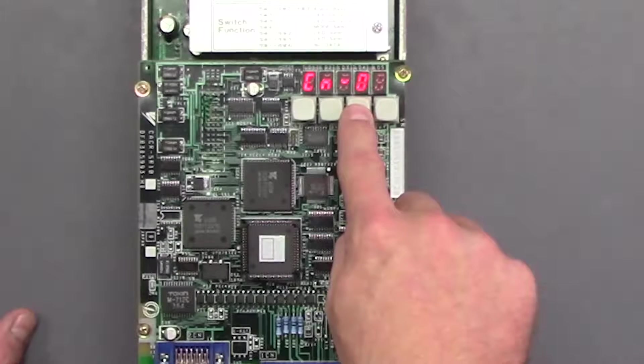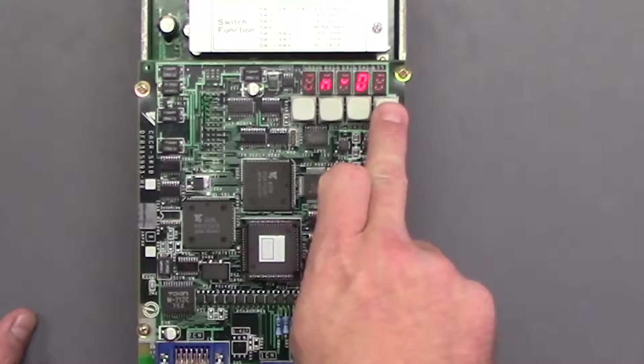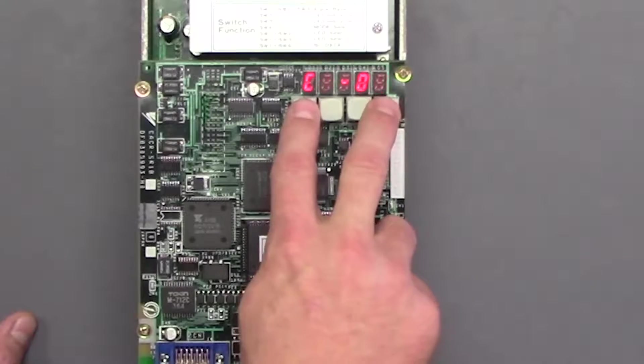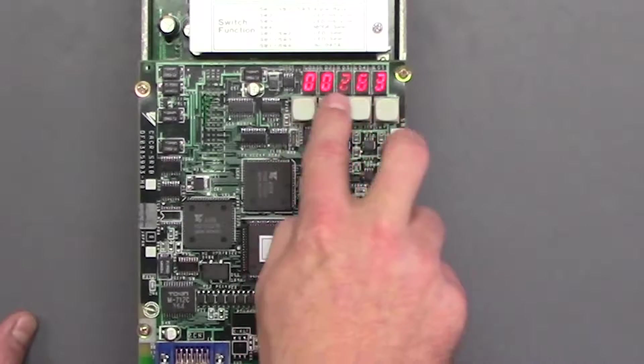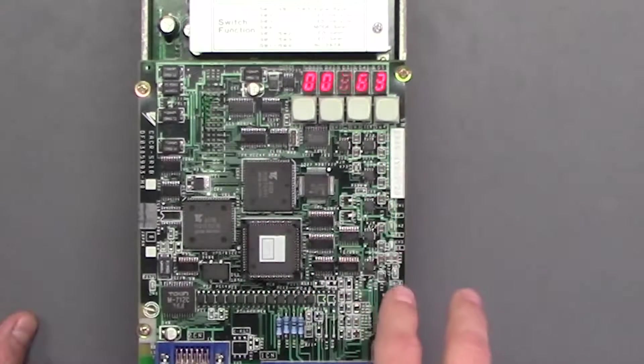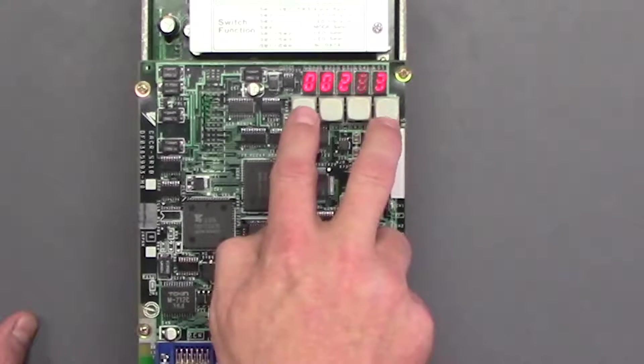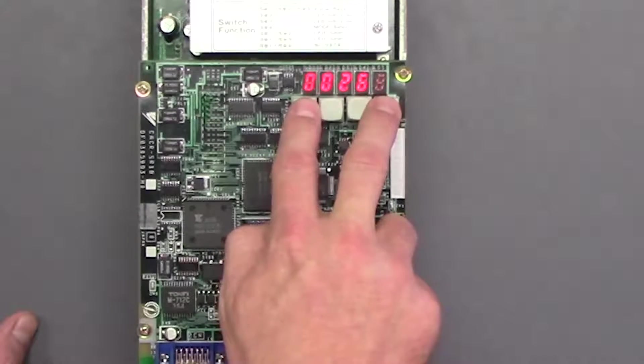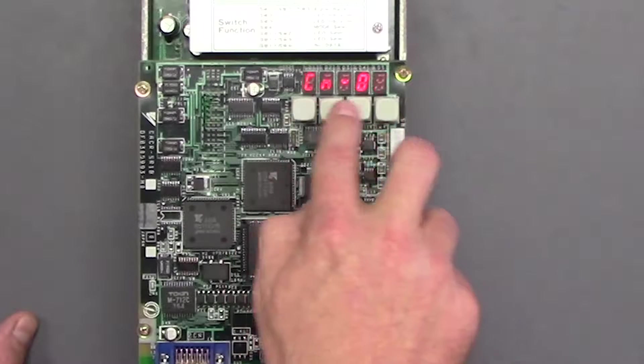To enter a CN you want to press switch 4 and 1 at the same time and that will get you in. To get you back out you do the same thing, switch 1 and switch 4 same time, now you're back out.